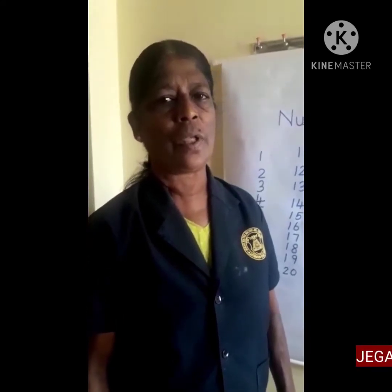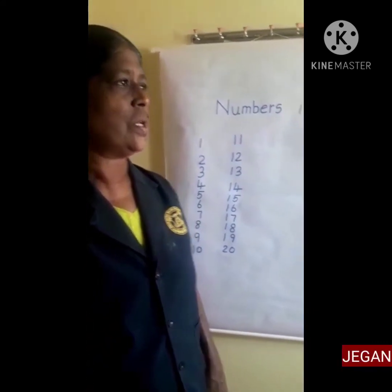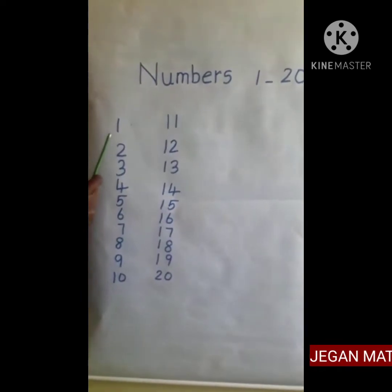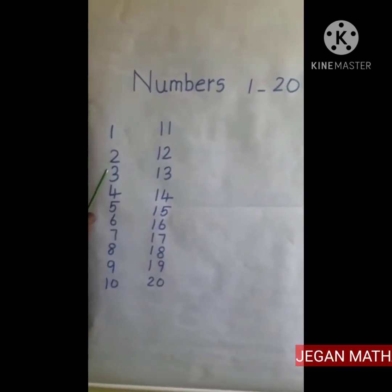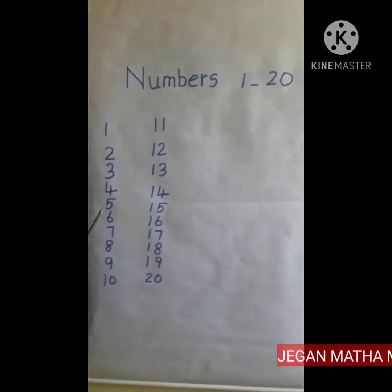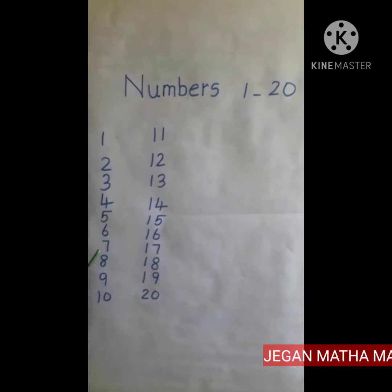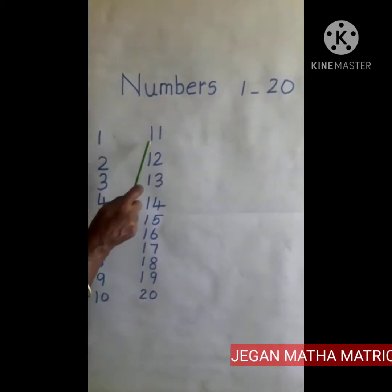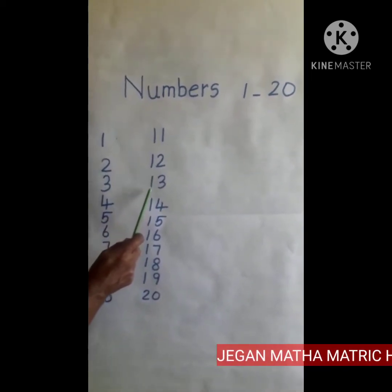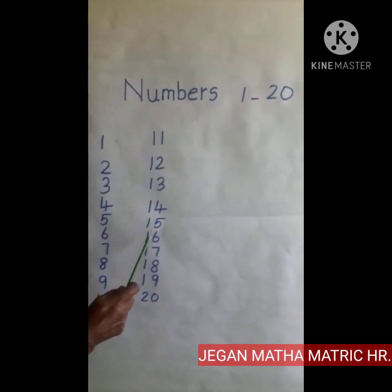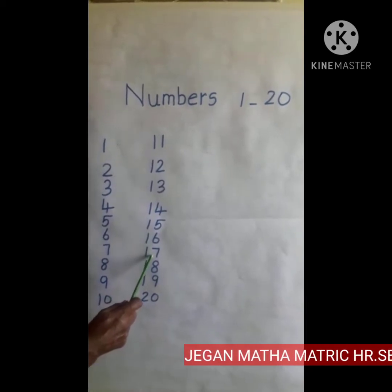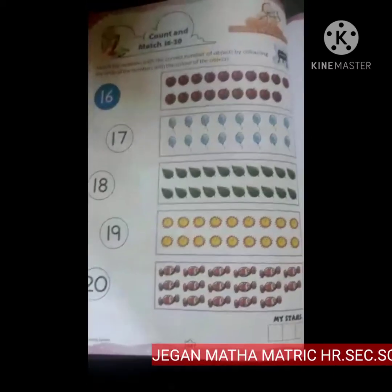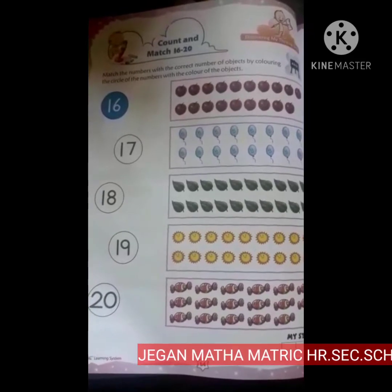Good morning children. Today we are going to do count and match. Before we go for that, let us recall the numbers from 1 to 20: 1, 2, 3, 4, 5, 6, 7, 8, 9, 10, 11, 12, 13, 14, 15, 16, 17, 18, 19, 20. Kindly take your book, children, page number 64.